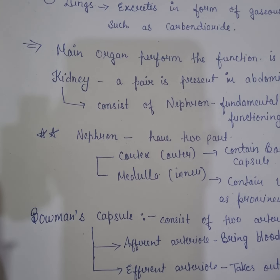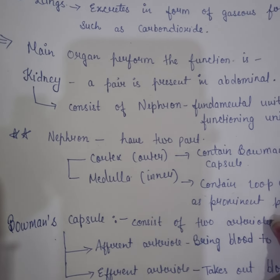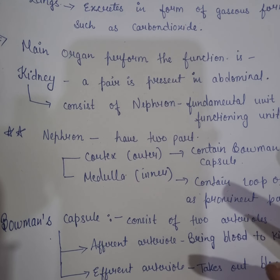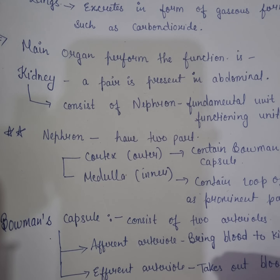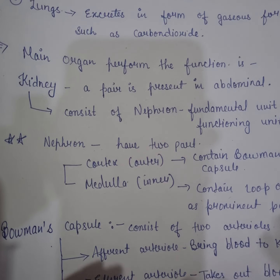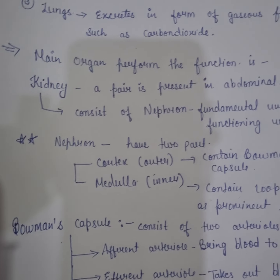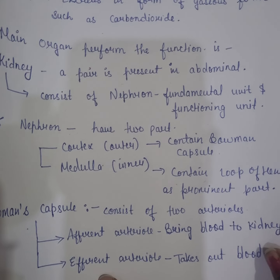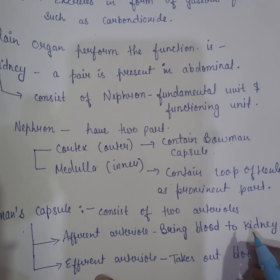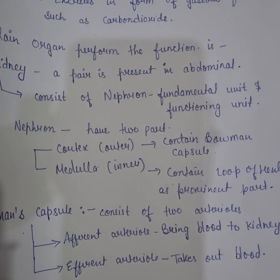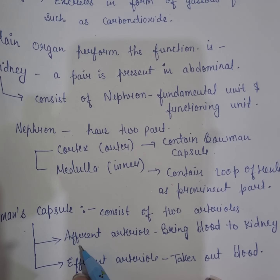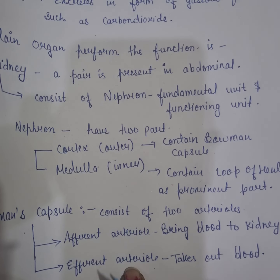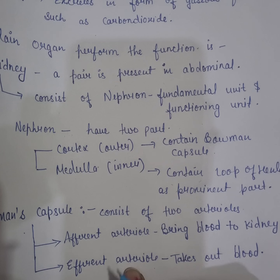Bowman's capsule is part of the glomerulus, in which different layers are present. It contains two arterioles which help with filtration. The first is the afferent arteriole and the second is the efferent arteriole.